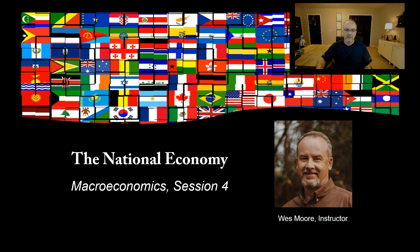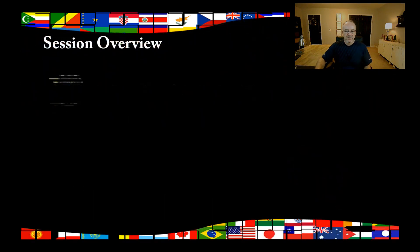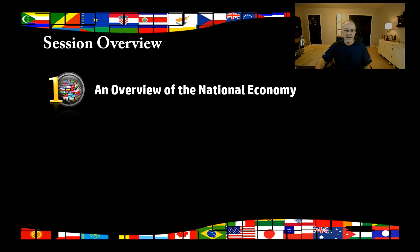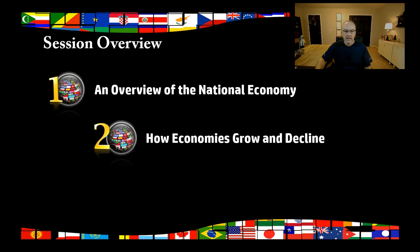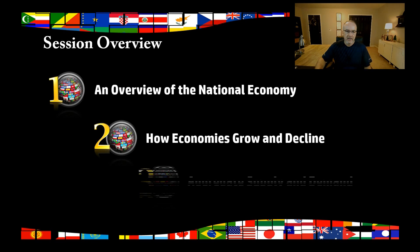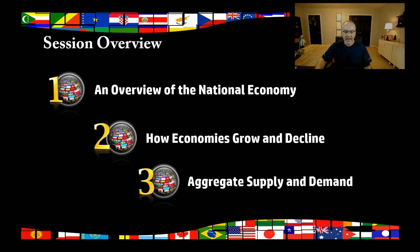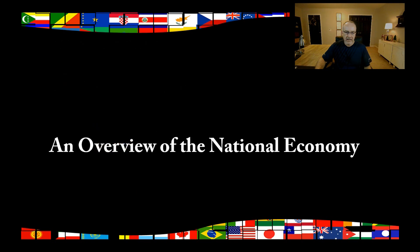There'll be three things that we want to cover today. First is an overview of the national economy — we want to talk about the term economy and how we measure improvement or decline in a national economy. Then we want to talk about how economies grow and decline, and look at some terms we use to characterize that. And finally, we want to look at aggregate supply and demand — it's actually a very easy concept to understand.